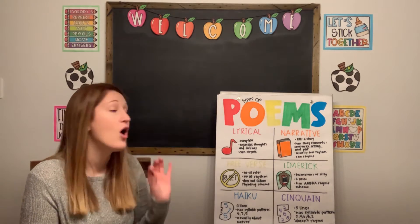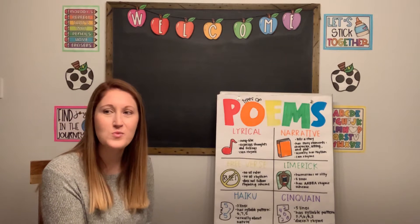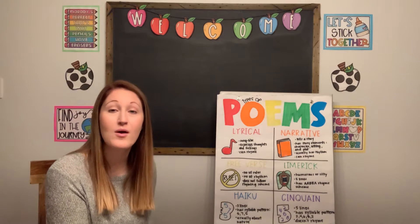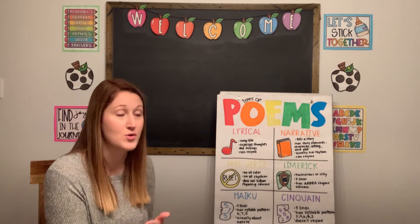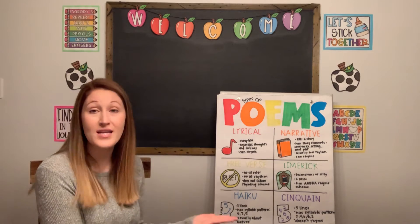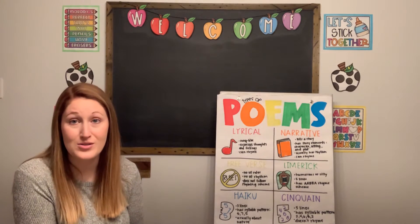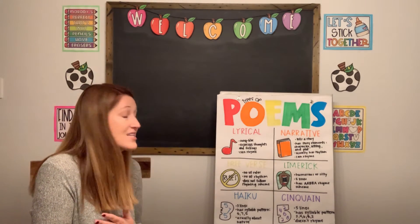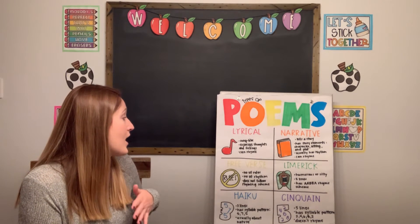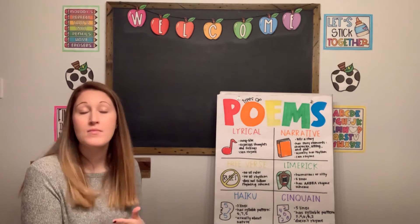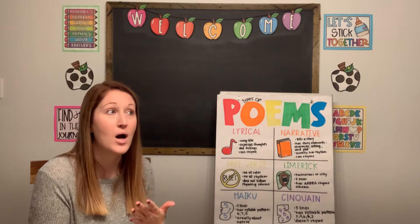Another type of poem is a narrative poem. You might've heard that word before, because we use it when talking about writing. We have personal narratives, which are stories about ourselves. A narrative tells a story and it'll have story elements like characters and settings, and it'll have a plot — a problem and a solution. It'll also usually have some rhythm, and it can rhyme. So it's going to tell a story, but through a poem.